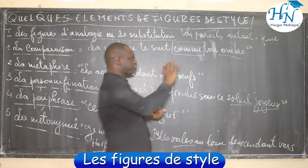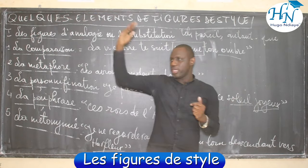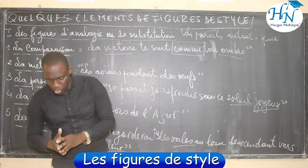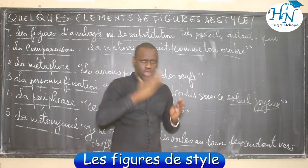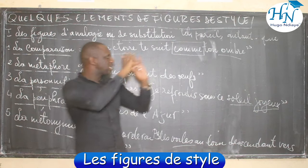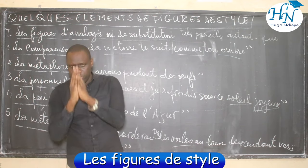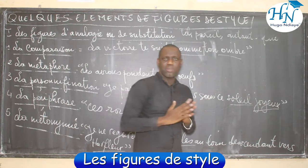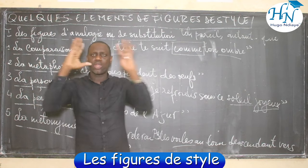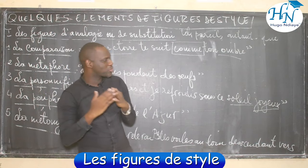Nous avons l'énumération. Qu'est-ce que l'énumération ? L'énumération consiste à dégager plusieurs éléments en se souciant ni de l'ordre croissant, ni de l'ordre décroissant. Par exemple, Victor Hugo dit : « Seul inconnu, le dos courbé, les mains croisées. » Vous avez senti que chaque élément est séparé par une virgule. Quelle est l'idée exprimée par cette énumération ? Nous avons ce qu'on appelle la solitude.